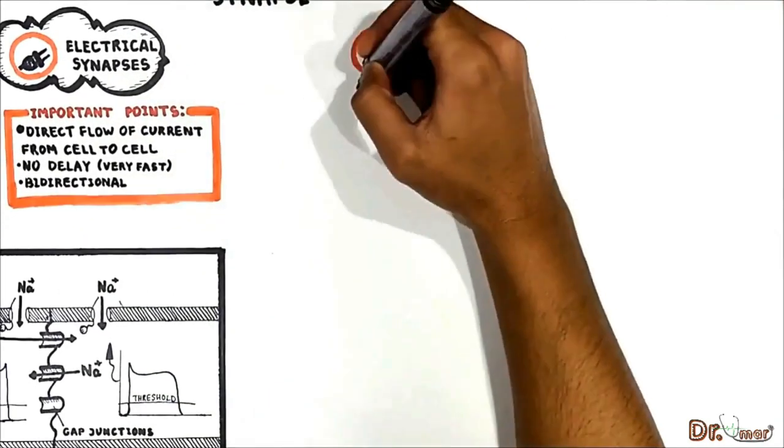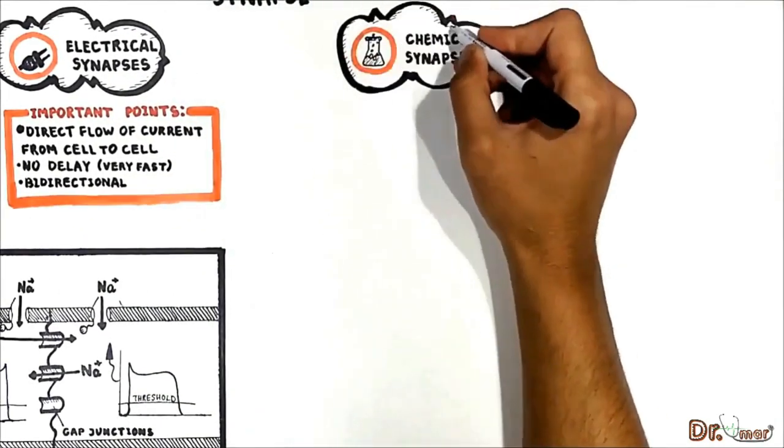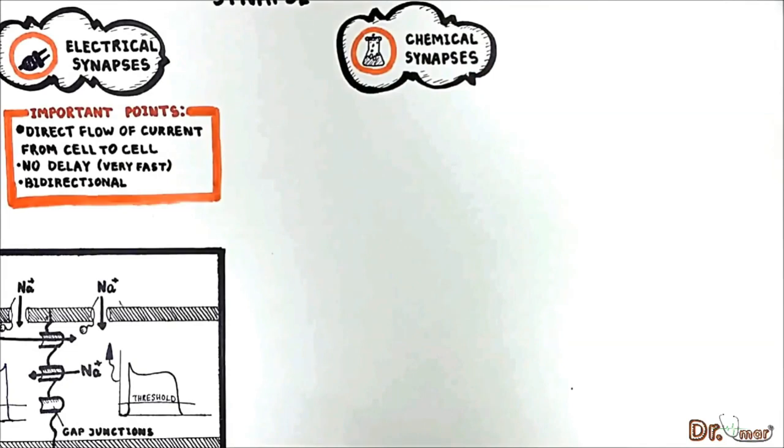The second type of synapse is a chemical synapse which is found in various regions of the central and peripheral nervous system and also in a place where the motor neurons communicate with the muscle cells at neuromuscular junction.